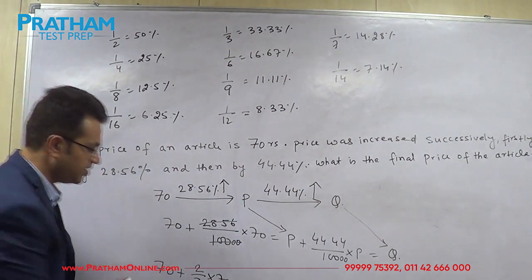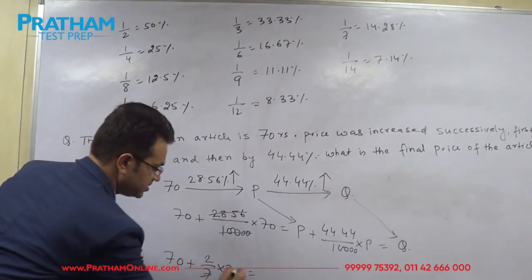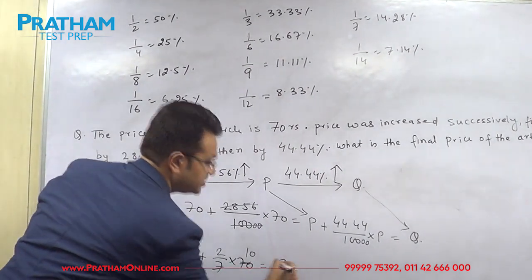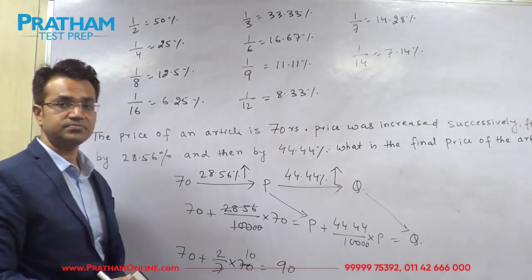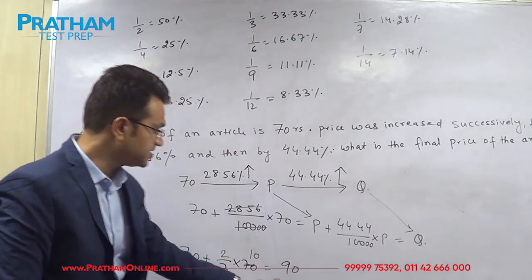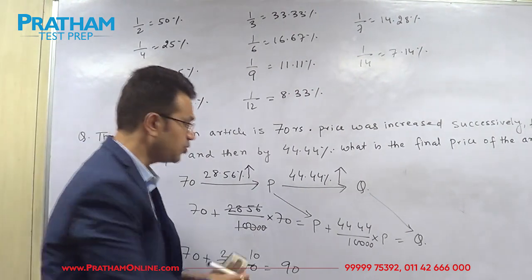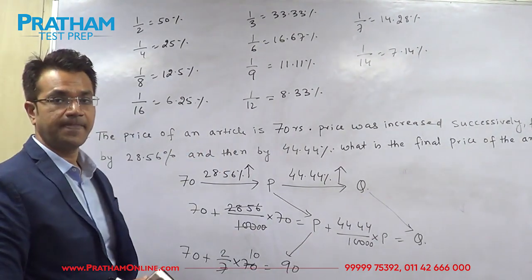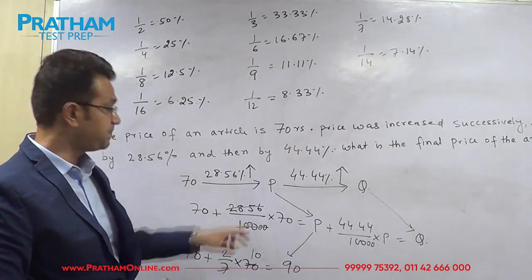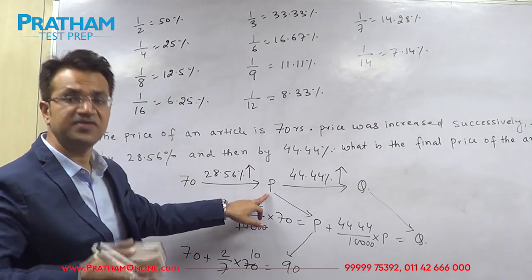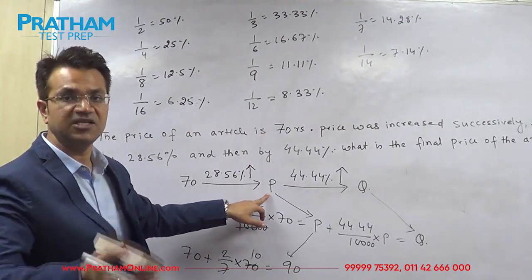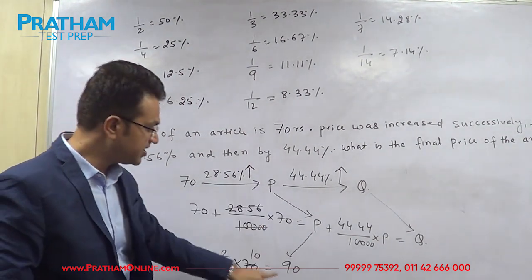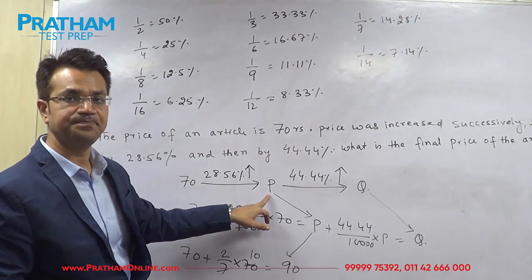That gives you 70 plus 20, which is 90. This 90 rupees is nothing but P — the price after the first increment.